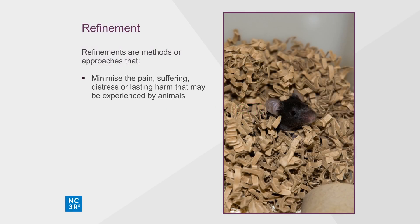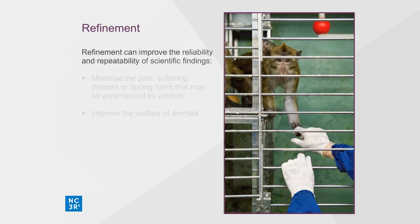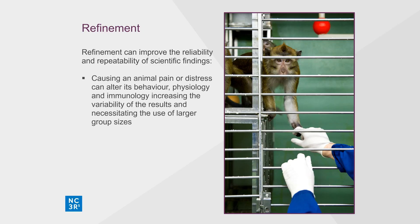Refinements are methods that minimise the pain, suffering, distress or lasting harm that may be experienced by animals, and which improve their welfare. Refinement applies to all aspects of animal use, from housing and husbandry to the scientific procedures performed. Refinement can also have an impact on the reliability and repeatability of scientific findings, because causing an animal pain or distress not only compromises its welfare, but can also alter its behaviour, physiology and immunology. Such changes can increase the variability between animals and necessitate the use of larger group sizes.